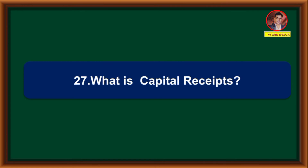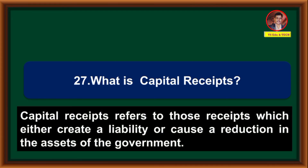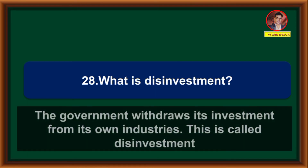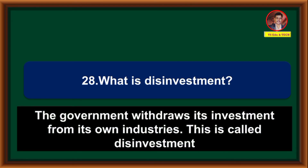What is capital receipts? Capital receipts refers to those receipts which either create a liability or cause a reduction in the assets of the government. What is disinvestment? The government withdraws its investment from its own industries. This is called disinvestment.